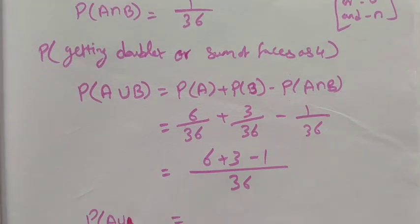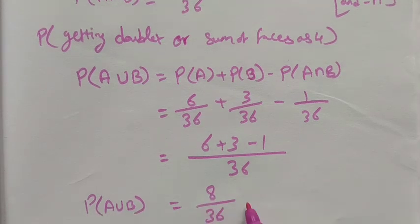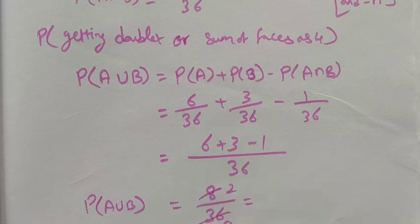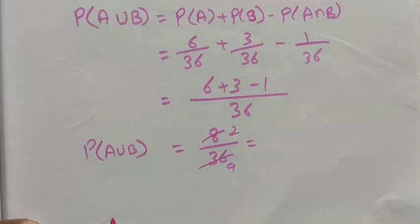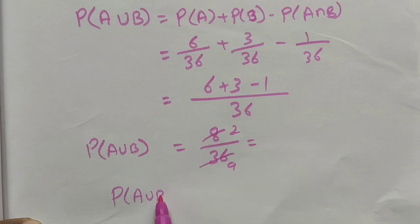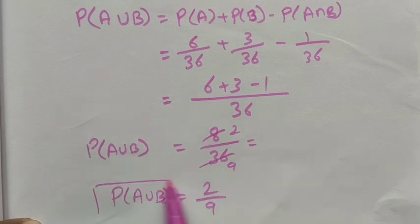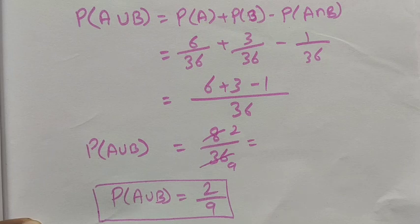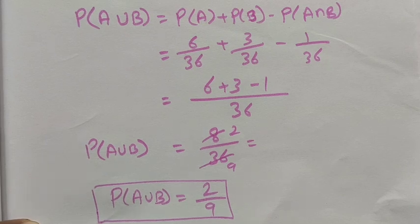The probability of A union B is equal to 8/36, which simplifies to 2/9. This is the probability of getting a doublet or sum of faces as 4.